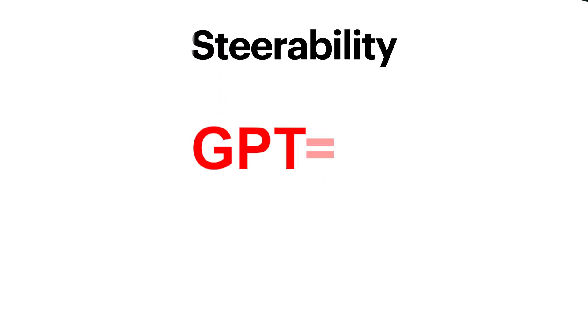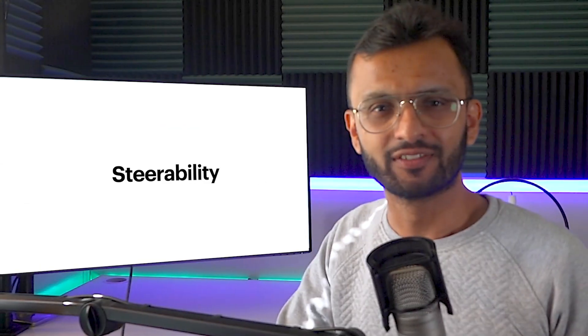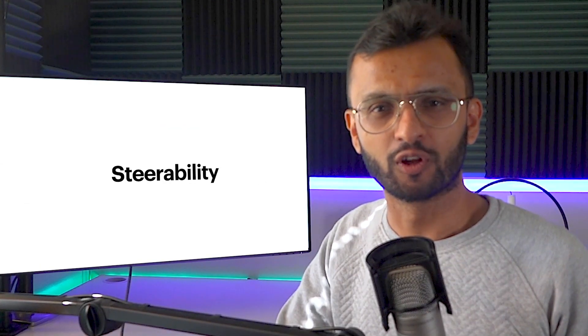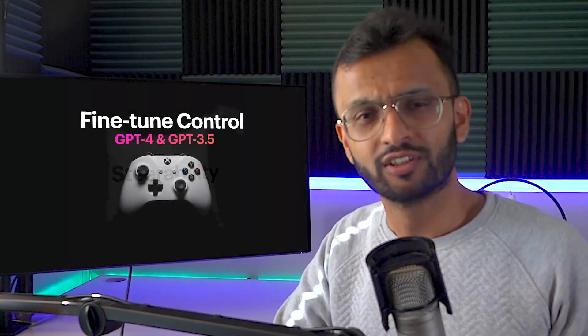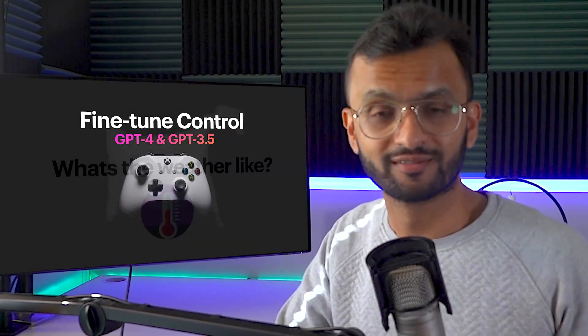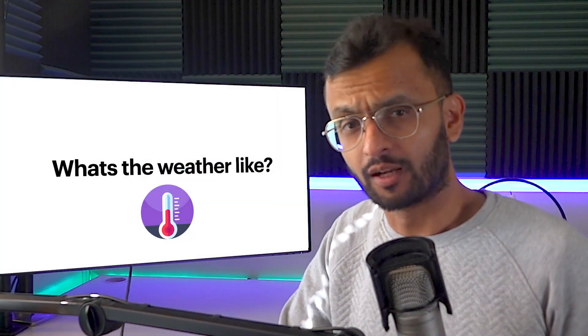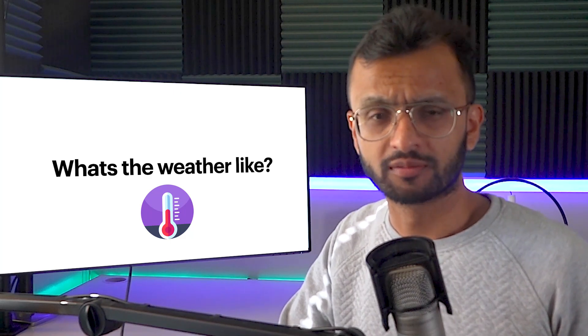OpenAI has released more steerable versions of GPT-4 and GPT-3.5 Turbo, giving you finer control over your AI responses. You can imagine playing a racing game with a joystick versus a D-pad. Consider this example: an AI-powered weather chatbot.